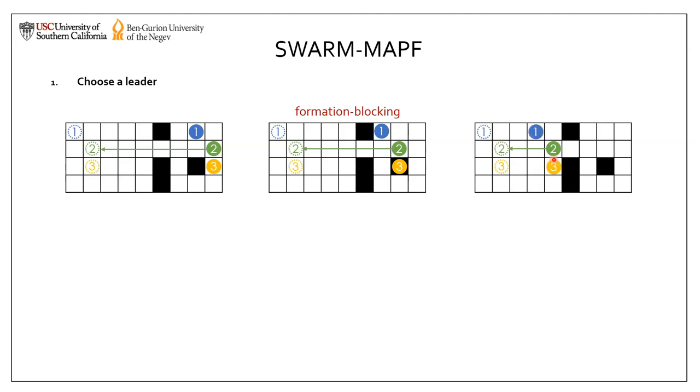Similarly, if agent 2 is here, then agent 1 and 3 can stay in their desired formation without colliding with an obstacle. So this is not a formation blocking location for agent 2.